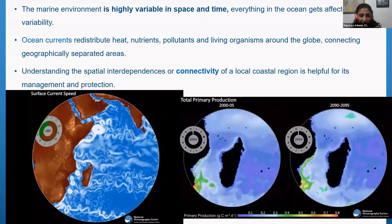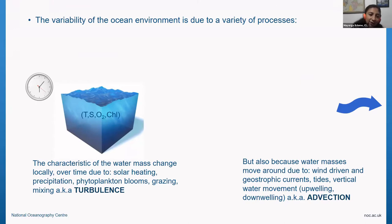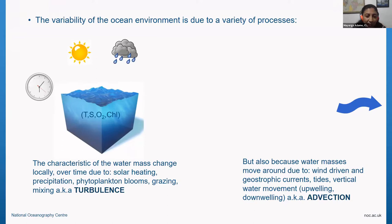The variability in the ocean is due to a variety of processes. You can have a water parcel with specific characteristics — usually temperature, salinity, oxygen, and chlorophyll. It can change locally over time due to solar heating, precipitation, phytoplankton blooms, grazing, or mixing. This small-scale movement inside the water parcel is what we usually call turbulence.